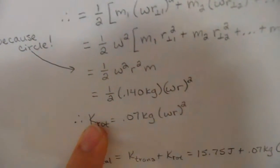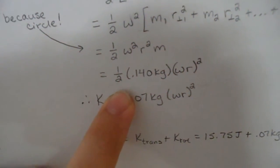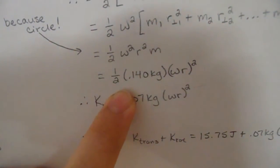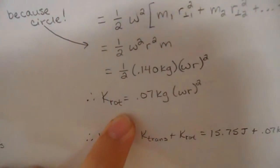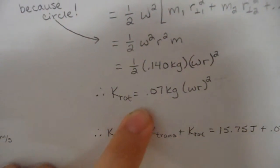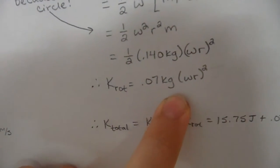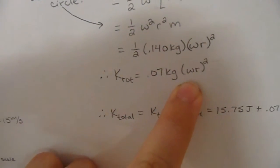Now, to return back to the problem, the only variable that we were given is the mass. So, when we plug that in, we get the rotational energy or the kinetic rotational energy is 0.07 kilograms times the square of omega r.